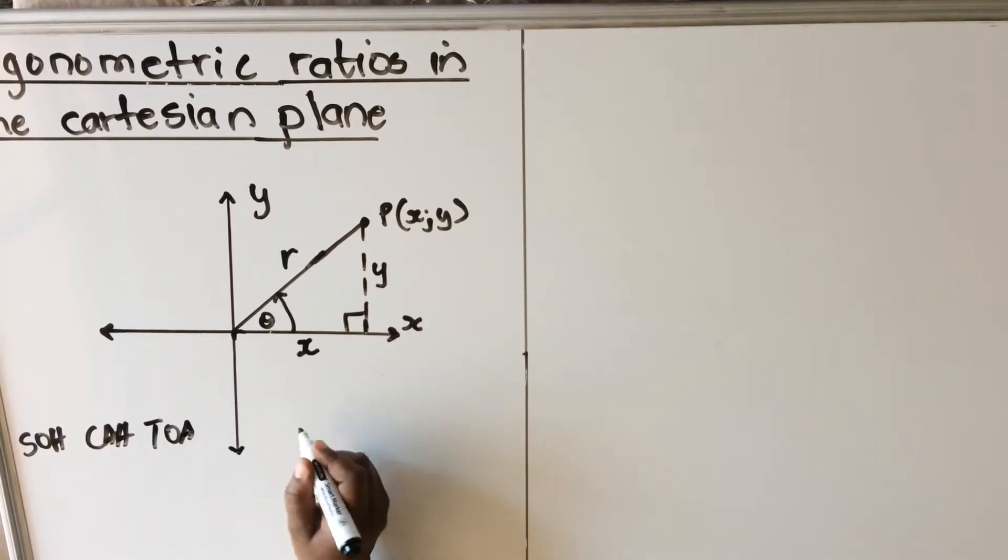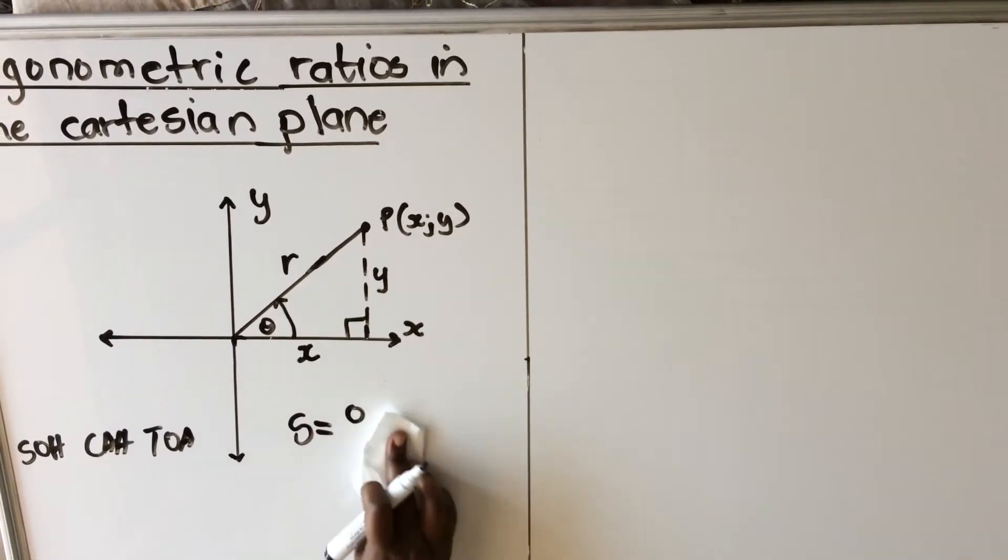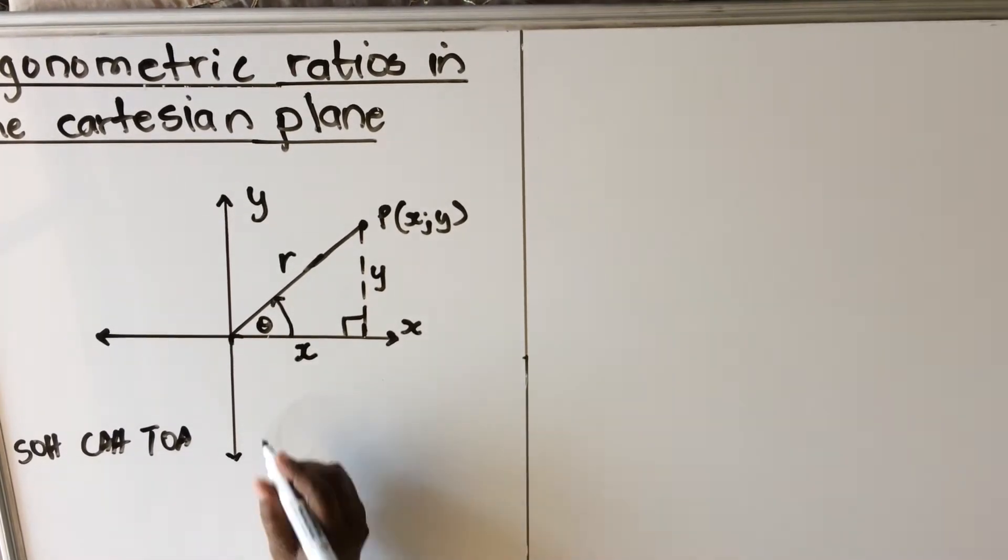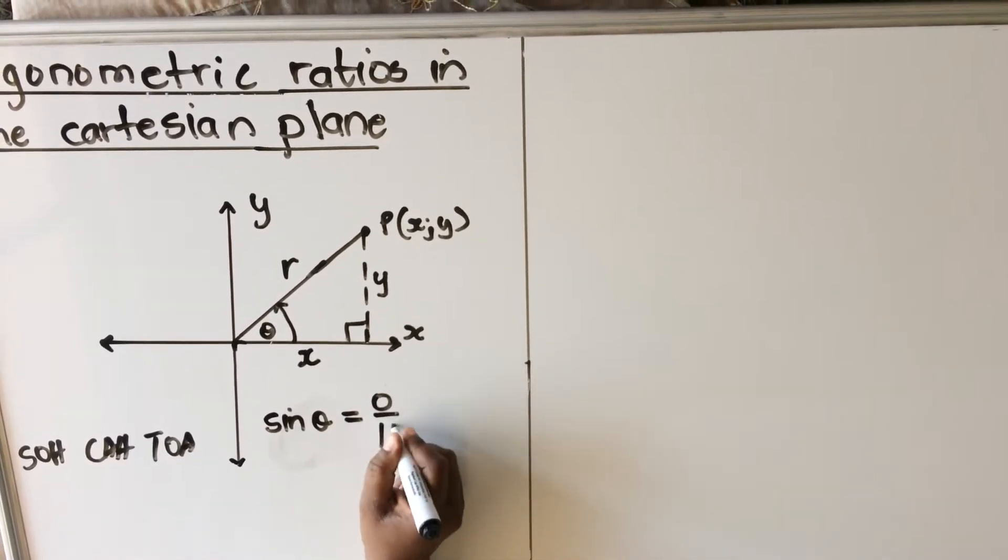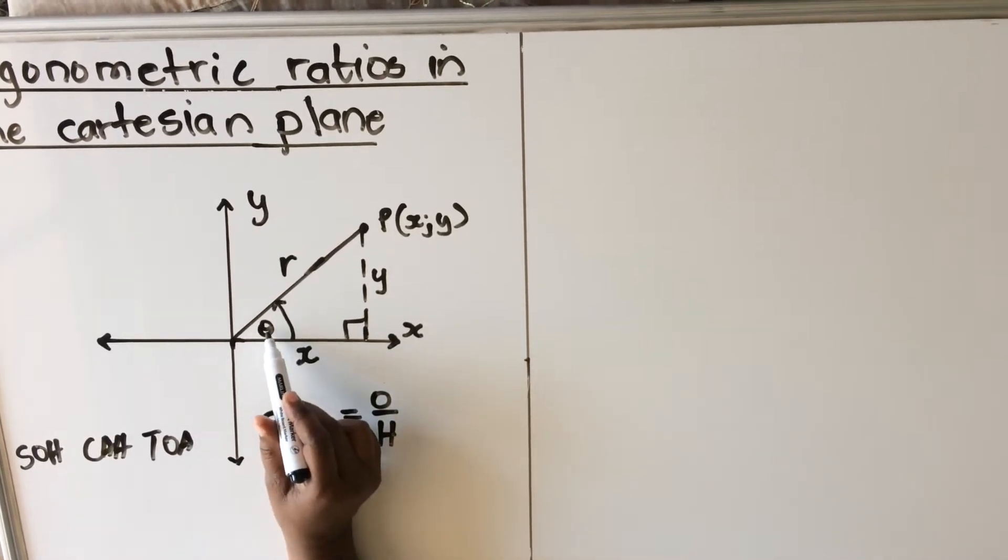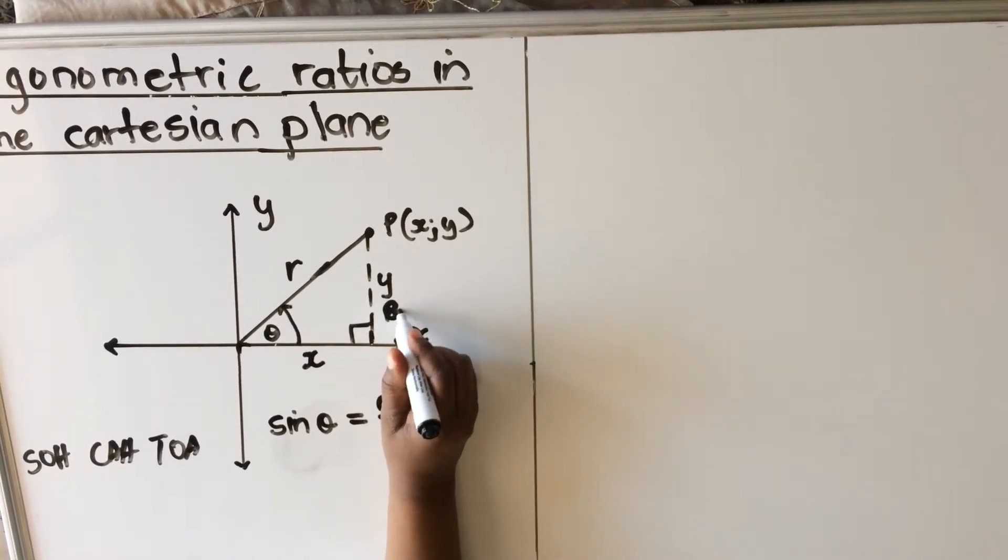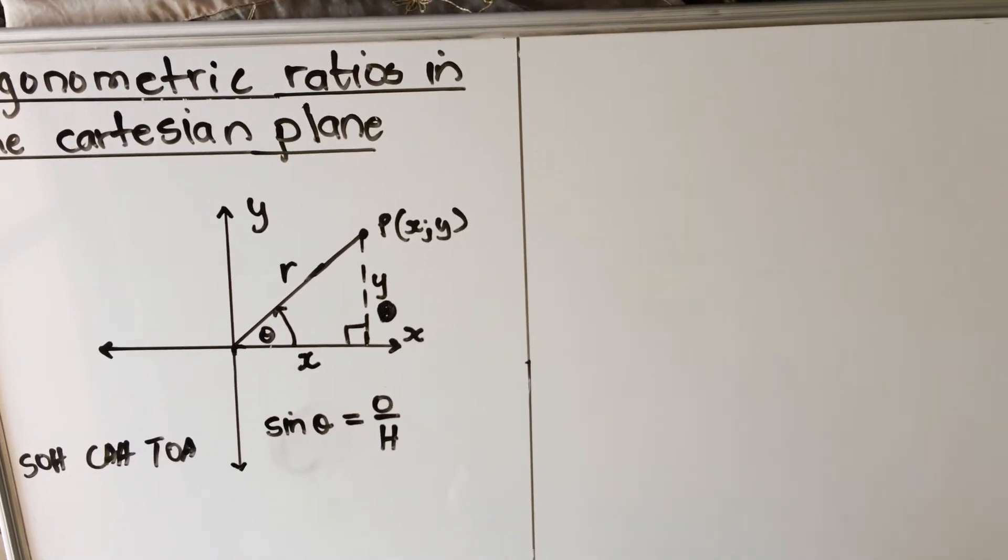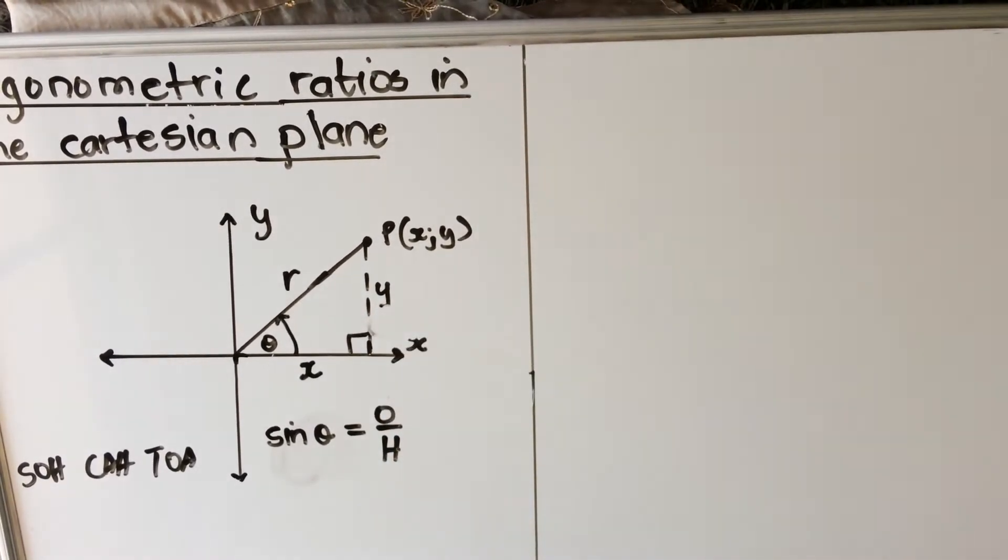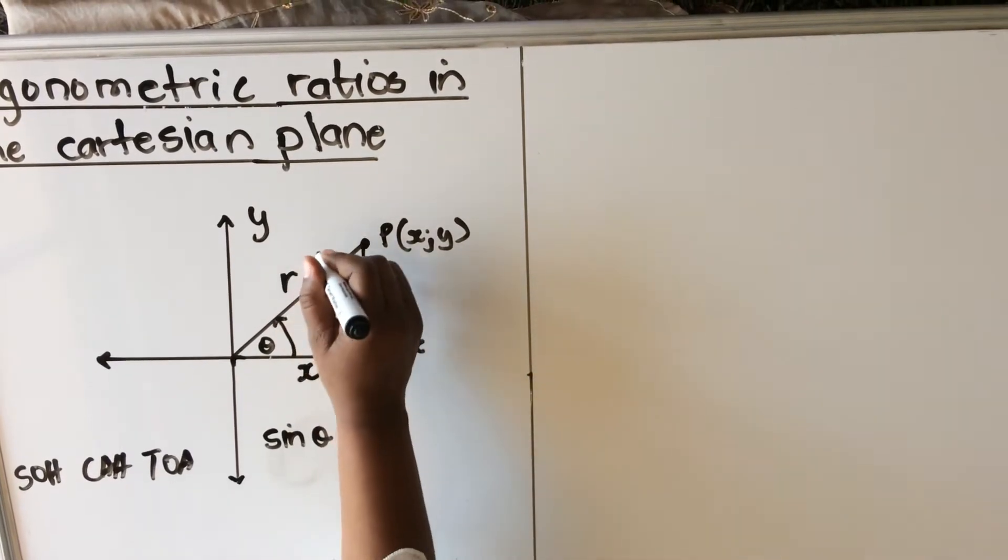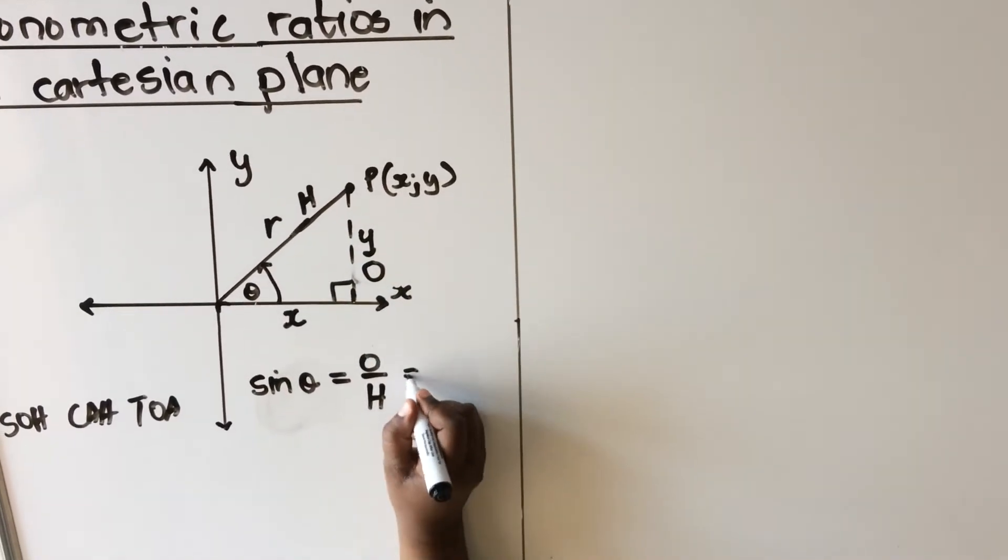Okay, I want you to write the sin formula. Sin theta is equals to opposite over hypotenuse. Now let's look at this diagram - the line that is opposite the theta is this one, that's your O. Let me write it properly - and this one is your hypotenuse. So your sin theta is opposite over hypotenuse, so do you see that it is y over r.